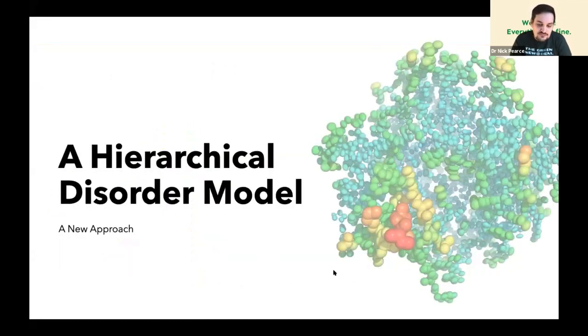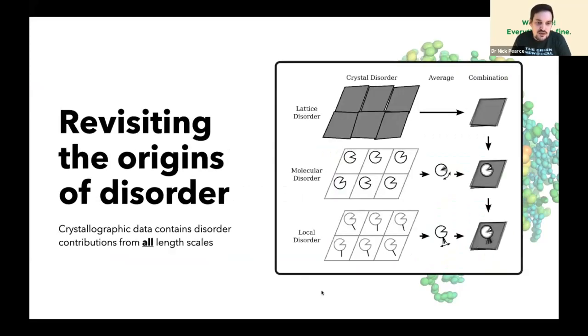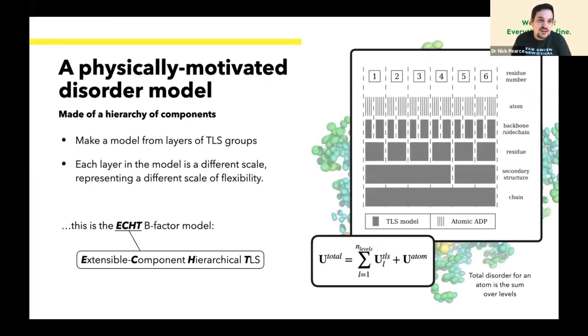So the model we developed is a hierarchical disorder model, which is a new approach to disorder modeling in crystallography. When we think about the disorder, we have a hierarchy of motions in our crystal. We have a disorder component from the crystal itself, from any lattice imperfections. We also have your molecule rocking in the unit cell, creating rigid body molecular motions. And then you can have sections of your protein down to the scale of side chains or even atoms that are moving independently.